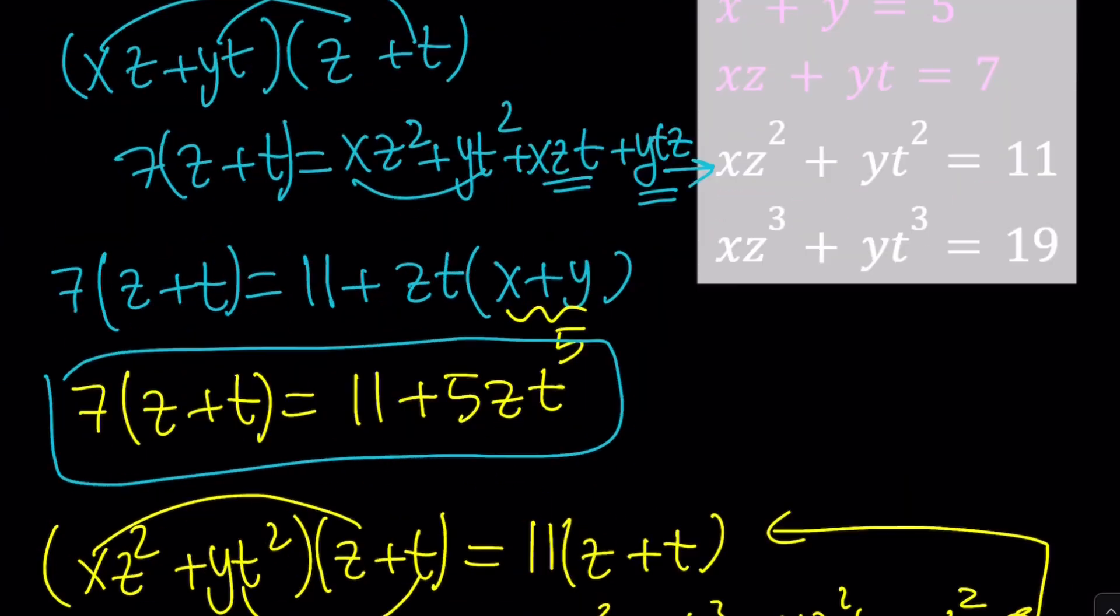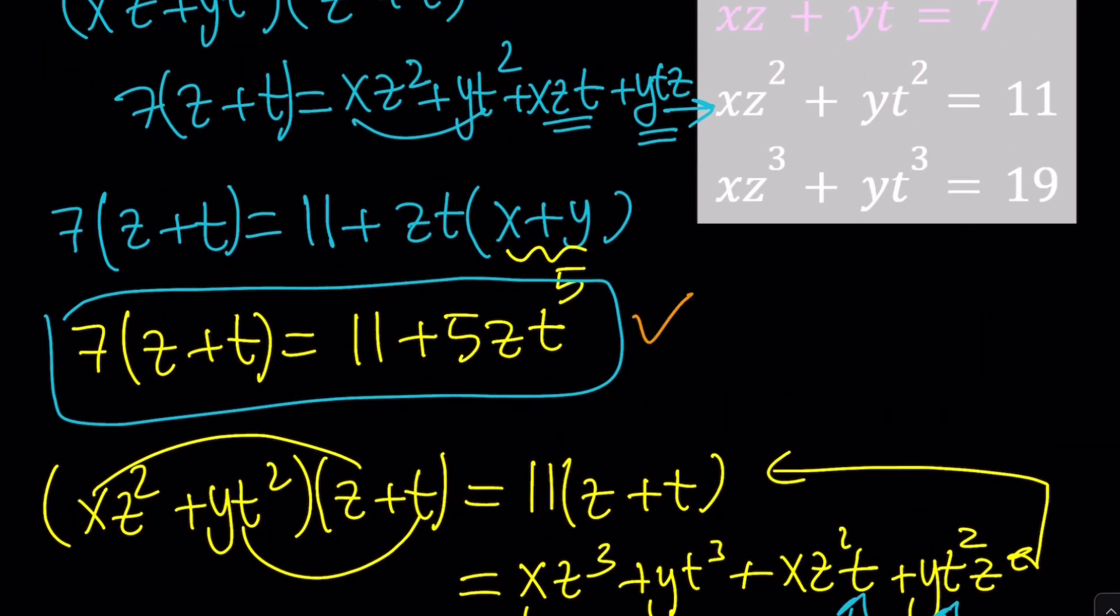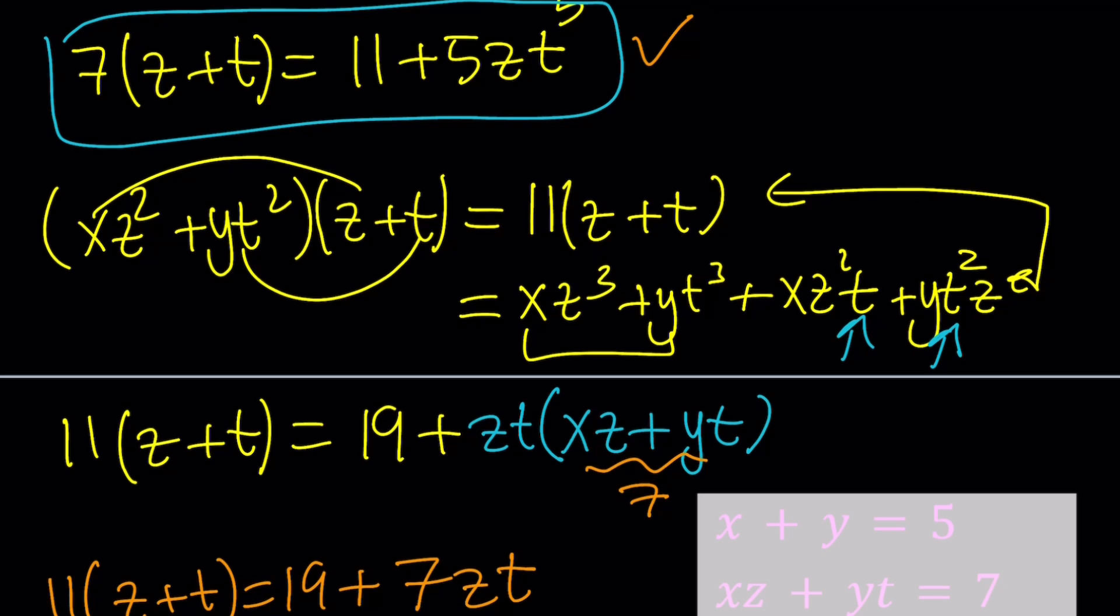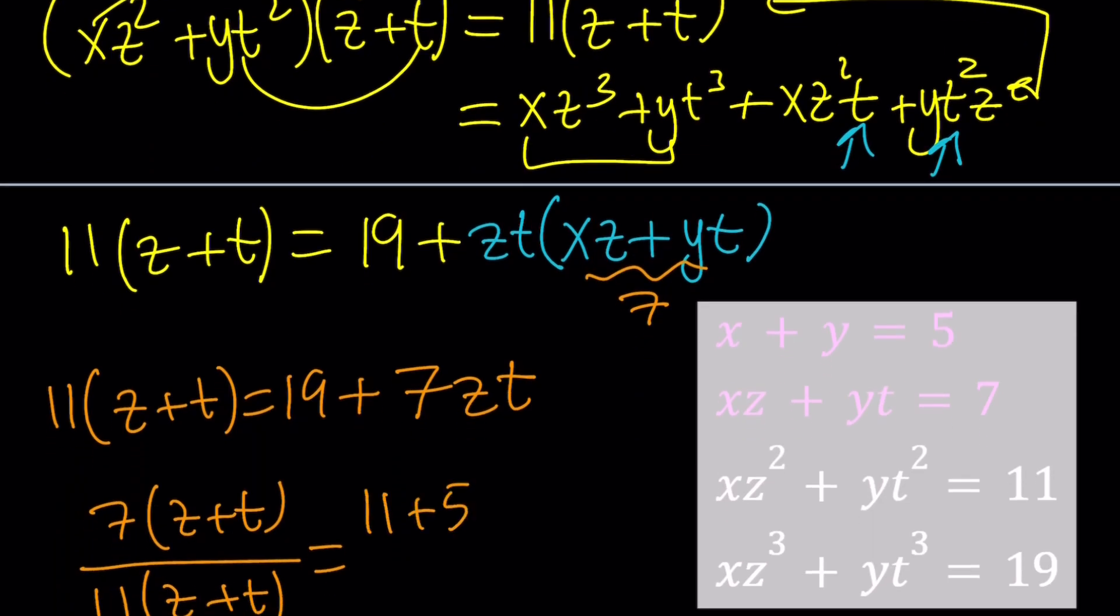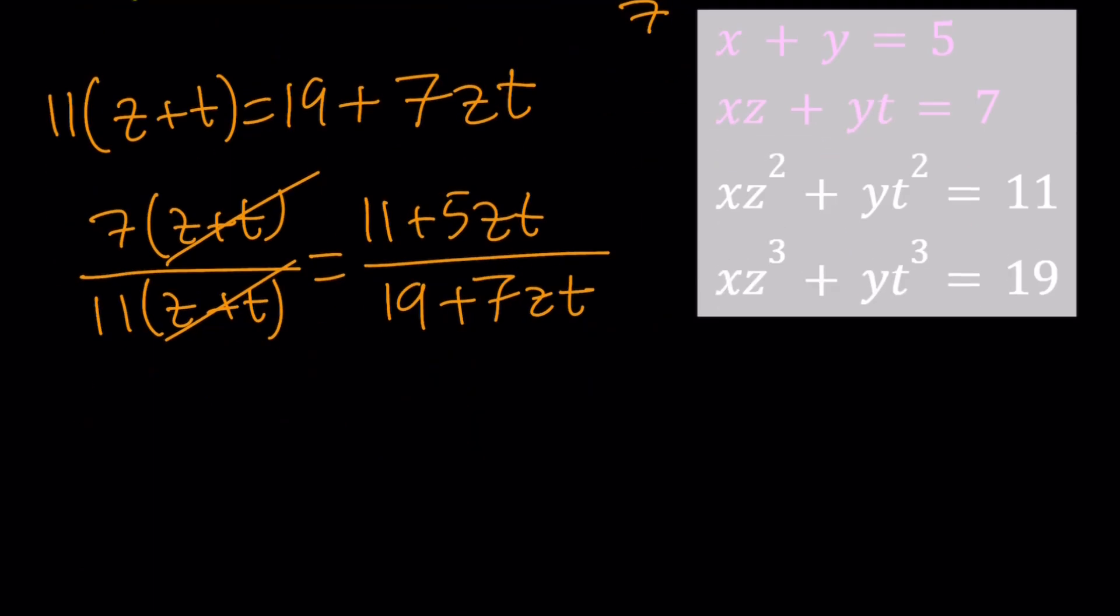Anyway, so we got this equation with the z plus t and zt. We have another equation with z plus t and zt. Now we can go out and put those two together and solve for z and t, which is going to help us obviously in so many ways. So how do we do that? So there's a couple different ways to go about it. I could divide these equations side by side, or I can basically just set the zt is equal to each other. I don't know however you want to do it. It doesn't really matter. Let's go ahead and divide. So 7 times z plus t divided by 11 times z plus t because division is kind of more fun, right? And that is 11 plus 5zt divided by 19 plus 7zt. Obviously, these two are going to cancel out. If you do the cross multiplication, you can solve for zt and then solve for z plus t and then solve for z and t separately.